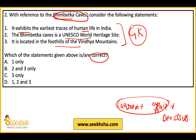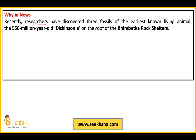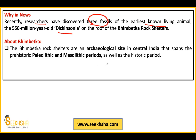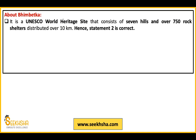Statement 2 — Bhimbetka is a UNESCO World Heritage Site — is correct, so options without it are eliminated. Statement 1 — it exhibits the earliest traces of human life in India — is also correct, so option D is the answer. Researchers discovered three fossils of the earliest known living animal, around 550 million years old, called Deccan Sonia. Bhimbetka is an archaeological site in central India from the Paleolithic and Mesolithic period, with earliest traces of human life, Stone Age evidence, seven hills, and over 750 rock shelters.